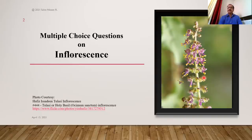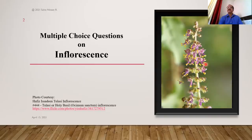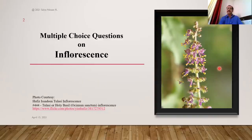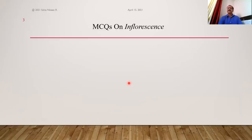In a branched inflorescence, the peduncle is the central axis on which flowers are not produced but branches are. These branches are the rachis on which flowers are directly produced. Simply remember: the part of the main axis on which flowers are produced in groups is called the rachis, and the part on which flowers are not produced is called the peduncle. This inflorescence of holy basil (Ocimum sanctum) is a special type called verticillaster, which we'll discuss later.